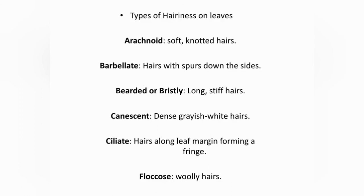Pubescence refers to having a hairy surface; there are many kinds of hairiness on leaves. Types include: arachnoid — soft knotted hairs; barbate — hairs with spurs at the base; beard or bristly — long, stiff hairs; canescent — dense, grey-white hairs; ciliate — hairs along the leaf margin forming a fringe; floccose — woolly hairs.